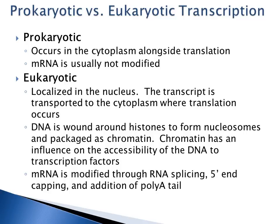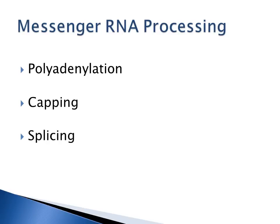Transcription differs slightly between prokaryotes and eukaryotes. In prokaryotes, transcription occurs in the cytoplasm right alongside translation, and messenger RNA is usually not modified. In eukaryotes, transcription occurs in the nucleus; once the messenger RNA transcript is made, it is transported to the cytoplasm where translation occurs. In eukaryotic cells, DNA is wound around histones to form nucleosomes and packaged as chromatin, which influences the accessibility of DNA to transcription factors. Also in eukaryotic cells, messenger RNA is modified through RNA splicing, 5' capping, and the addition of a poly-A tail.